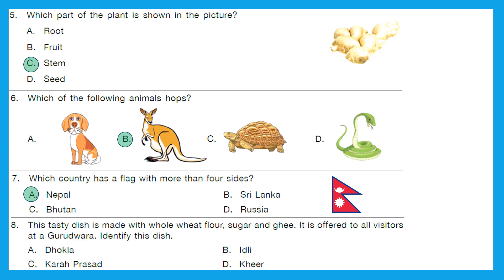Question 8: This tasty dish is made with whole wheat flour, sugar, and ghee. It is offered to all visitors at a Gurudwara. Identify this dish. If you have ever visited a Gurudwara, you will answer this very quickly. The right answer is option C — Karah Prasad.